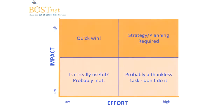Now let's look at this picture that divides your ideas into different quadrants. If something is high impact and low effort, that's probably a quick win — you should do it. If it's in the upper right-hand corner, that means it's high effort but also high impact, so strategy and planning are required. It might be something you want to do but that takes more time.